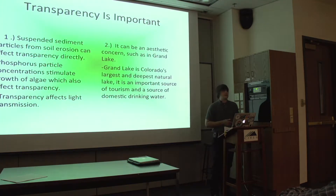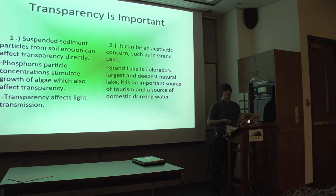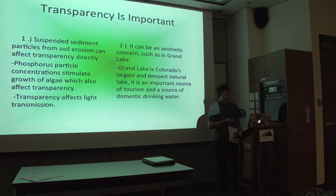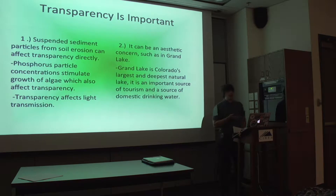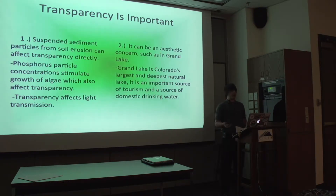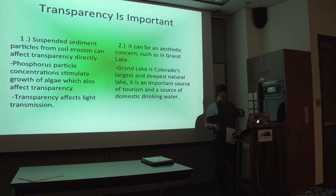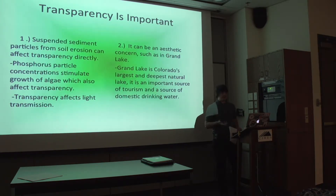Transparency is important for a number of different reasons. It affects light transmission, which can affect the growth of algae. The algae are the primary producers, or the primary energy source, for the higher trophic structures. So if you have a significant decrease in transparency, that can negatively affect the higher trophic structures.